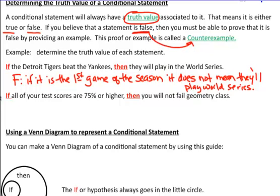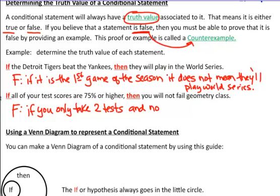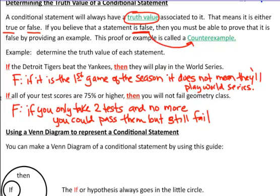How about the second one: 'If all your test scores are 75% or higher, then you will not fail geometry class.' True or false? This is actually false. Counter example: what if you only take two tests and don't finish all the rest? You could pass them but still fail geometry class. So this is what I mean about coming up with a counter example. Sometimes it seems logical for the moment, but you have to think about the big picture. If you can find any one example to show it is false, then do so.